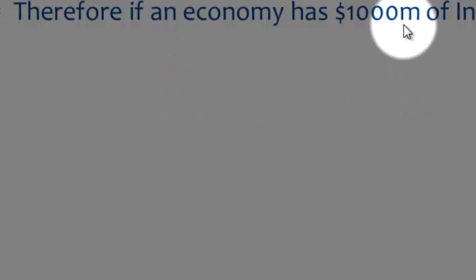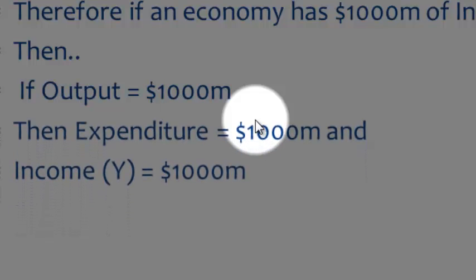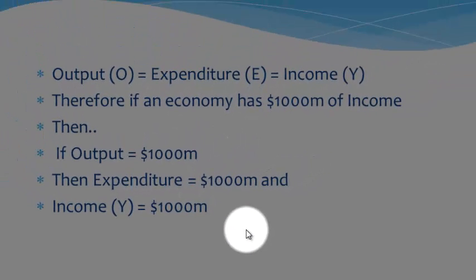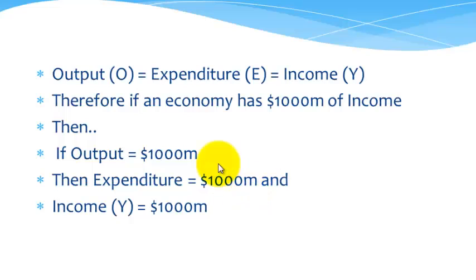So, therefore, if there's a thousand of income, then the output in terms of the value of goods and services produced is a thousand, and correspondingly the expenditure on those goods and services should also be a thousand. So, it's really important to remember the output equals expenditure equals income.